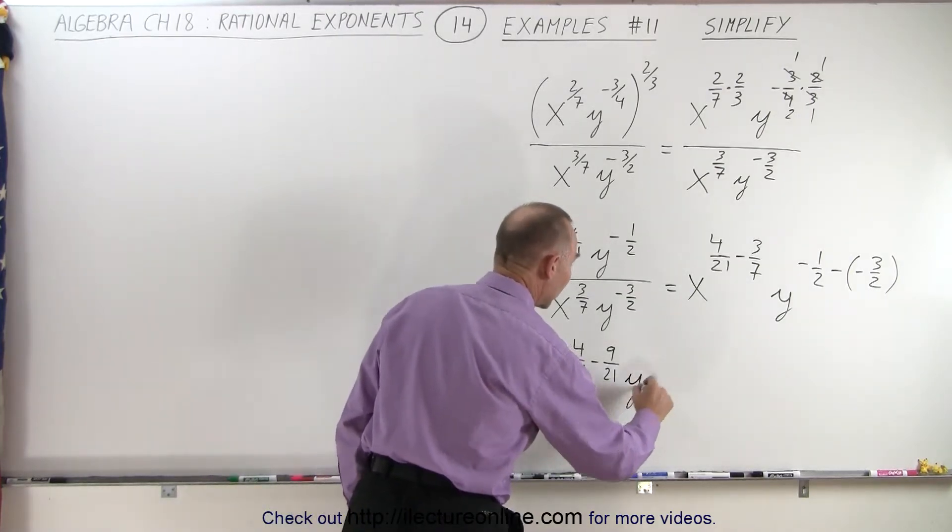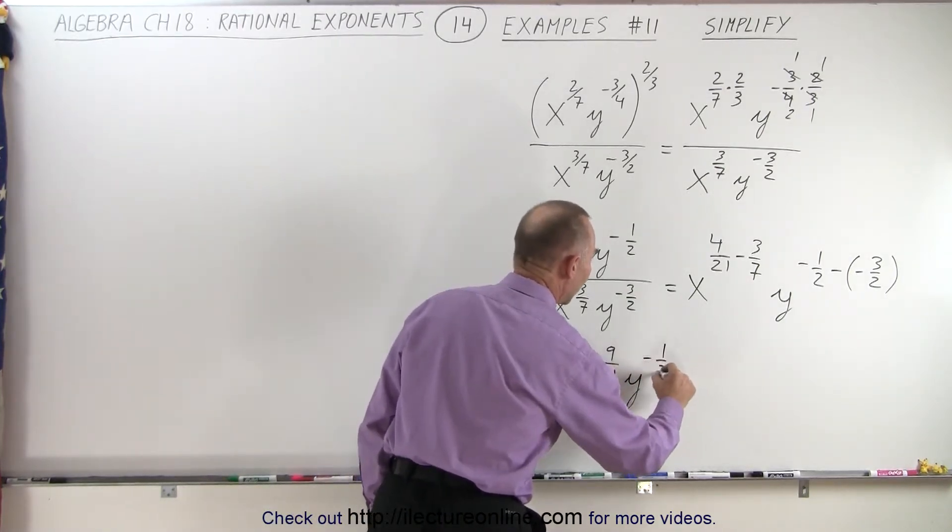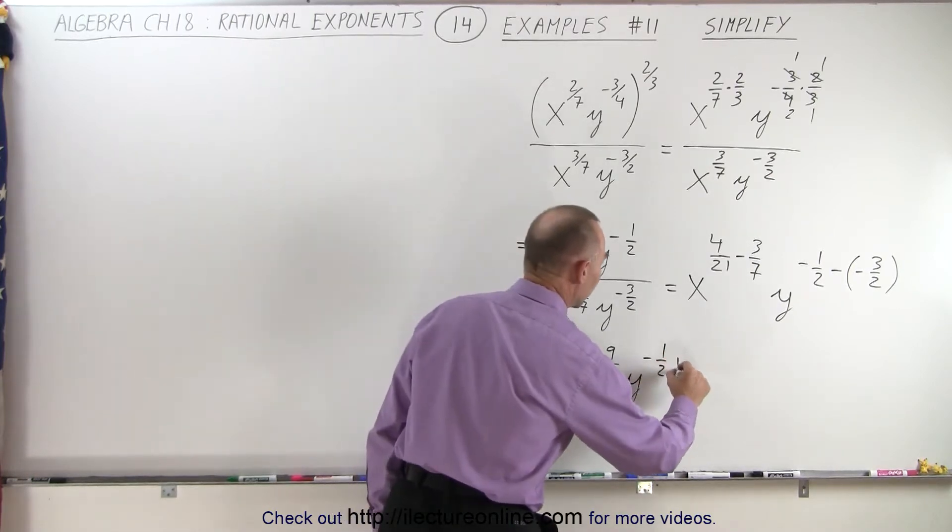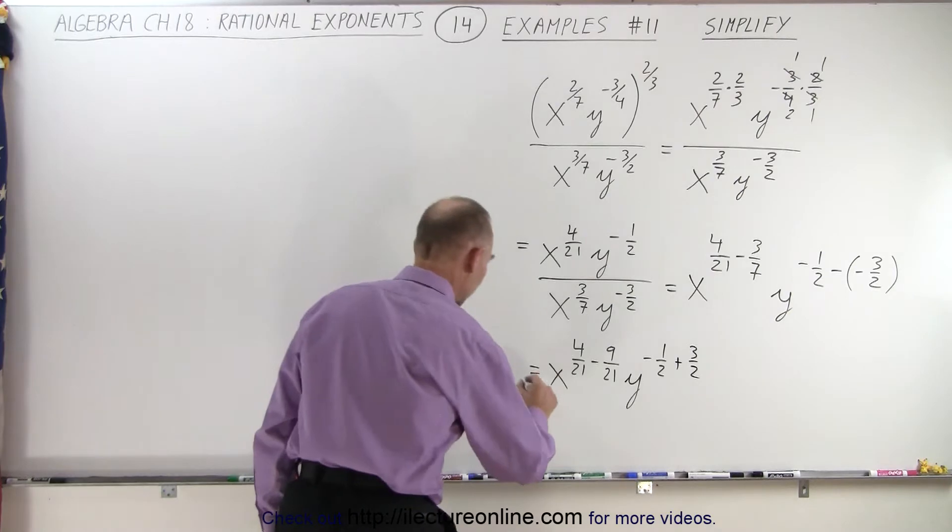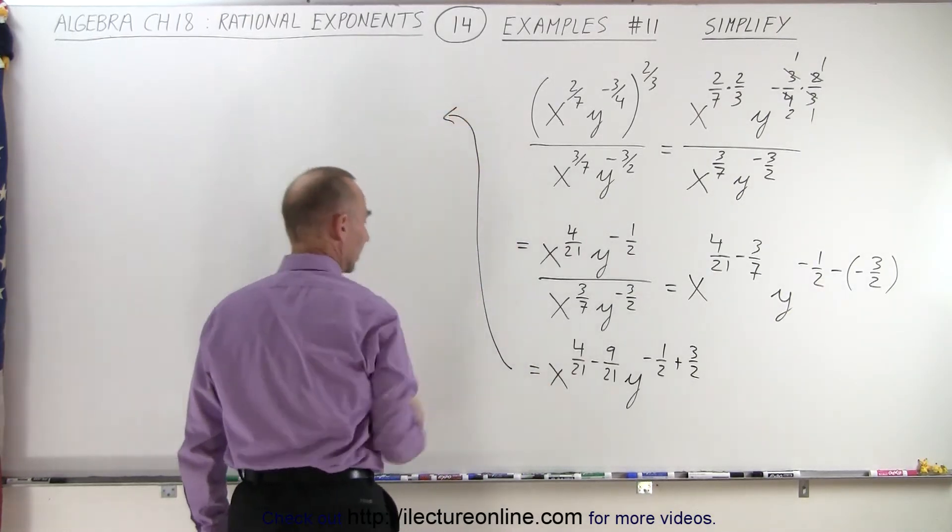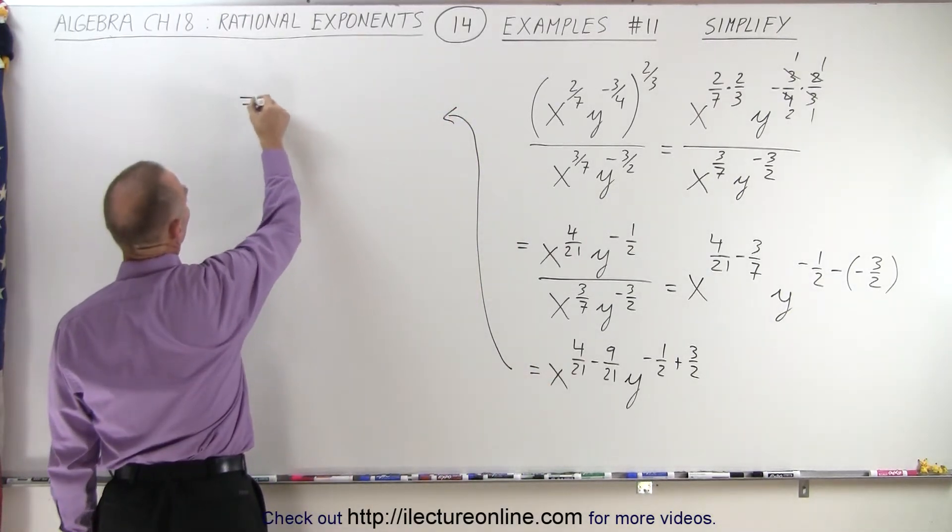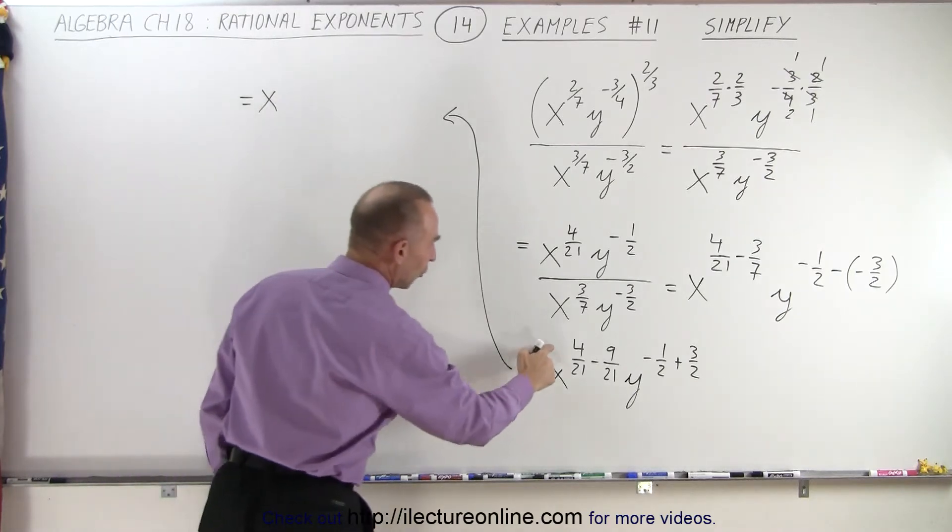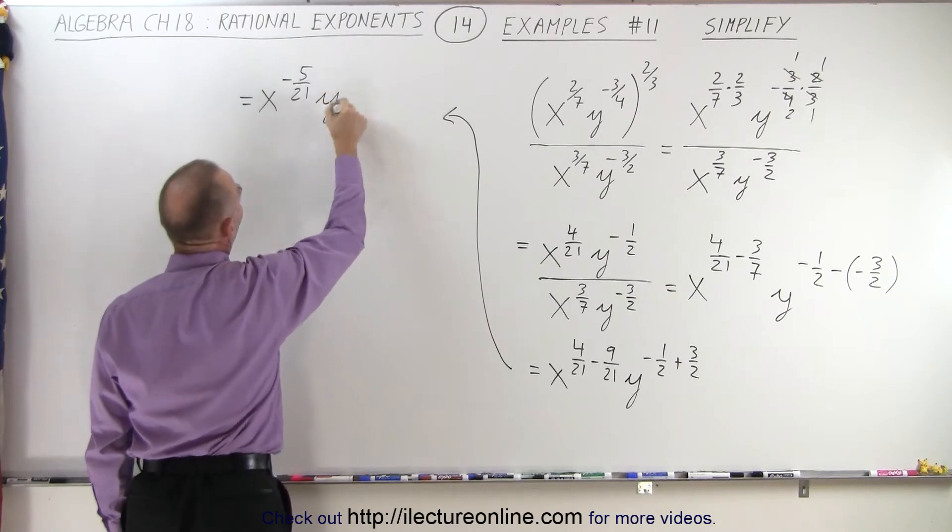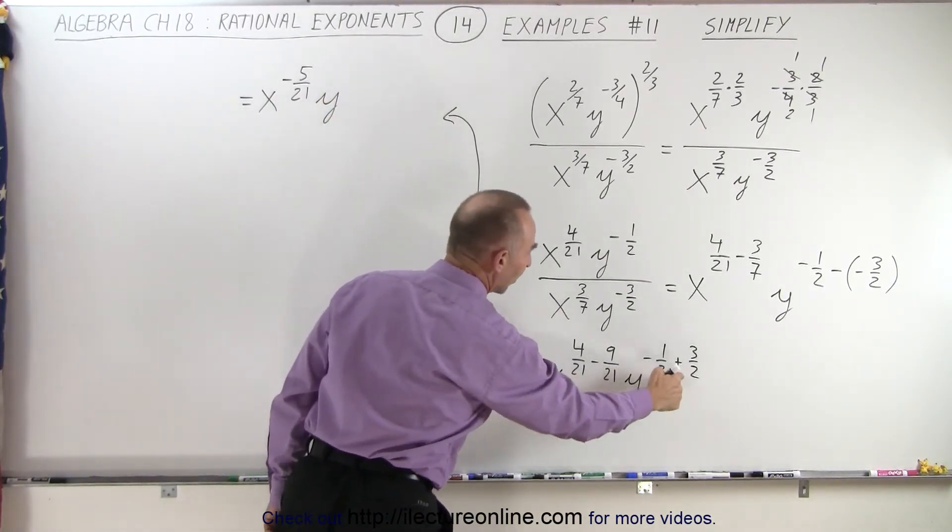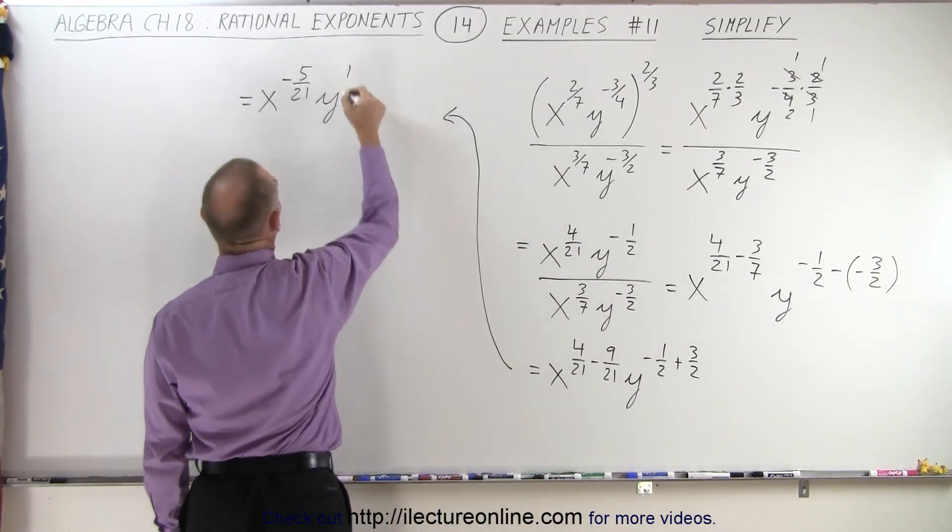Over here, this can be written as y to the negative 1 half, and a minus times a minus becomes plus 3 halves. So now when we, let me go over here and complete the job, so this is equal to x to the 4 minus 9, which is minus 5 over 21, and then y of minus 1 half plus 3 halves, that's y to the first power.